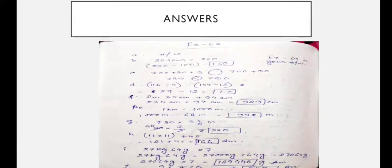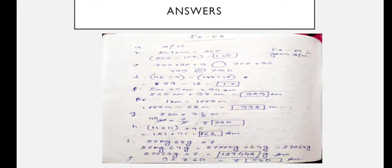As shown, I converted it to grams first and then multiplied by 7, giving 189,448 grams. The last question: cost of 9 items at rupees 60 each — 9 multiplied by 60 gives rupees 5,940.